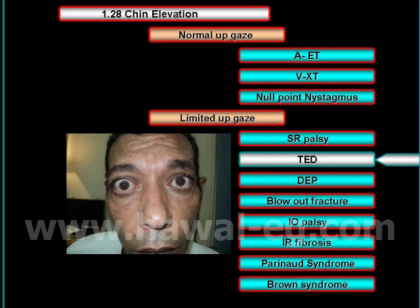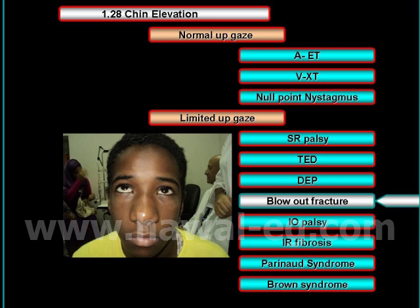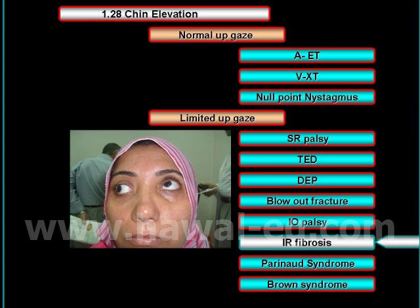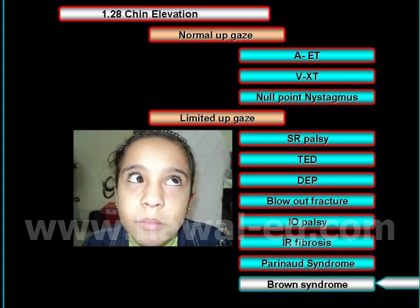Positive force duction causes of limitation of elevation include endocrine myopathy, orbital floor fracture, inferior rectus fibrosis, and Brown syndrome.